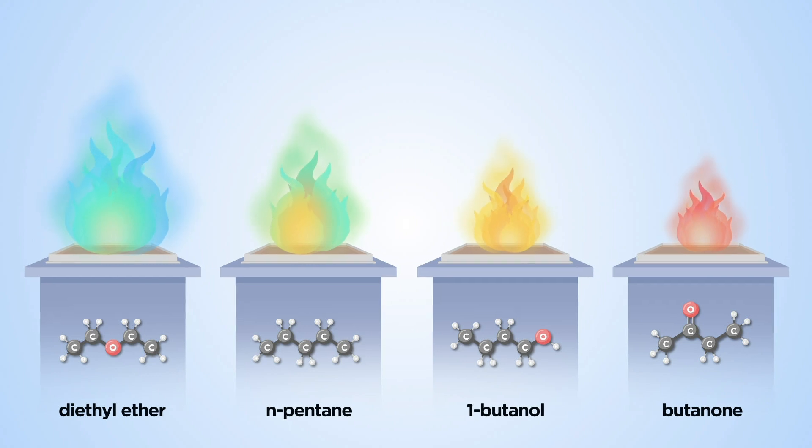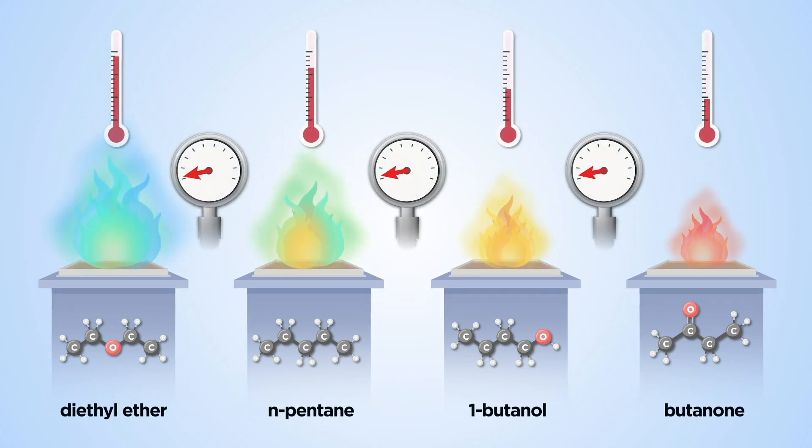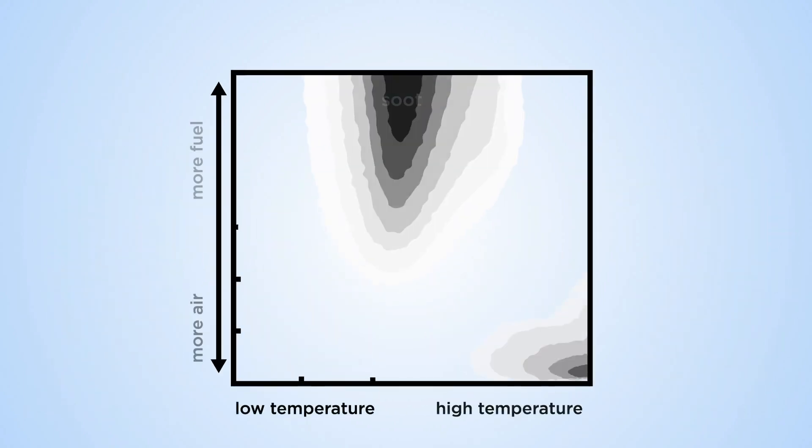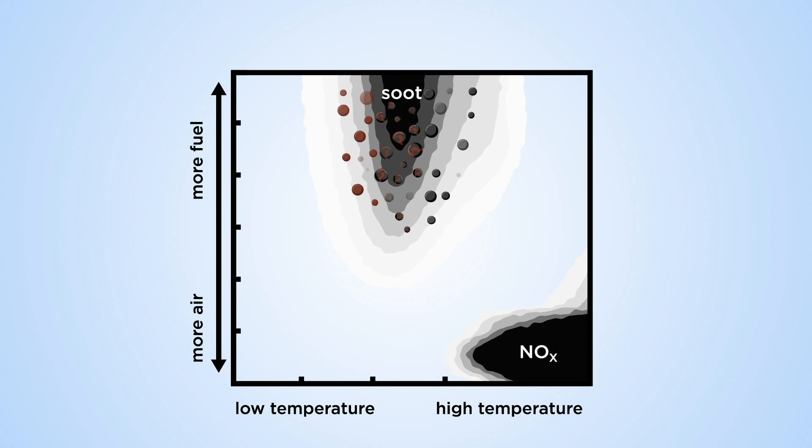Combustion occurs over broad ranges of temperature and pressure. Depending on the conditions, pollutants such as soot and NOx form.